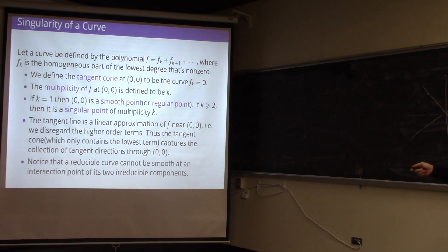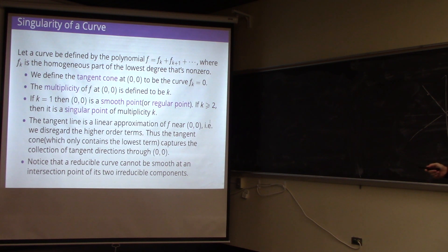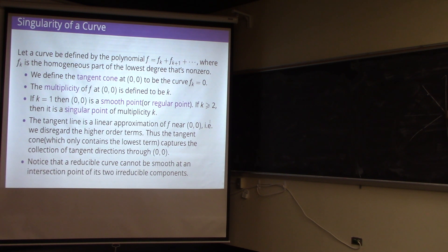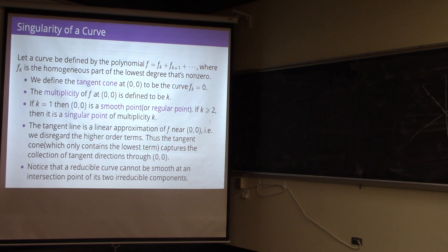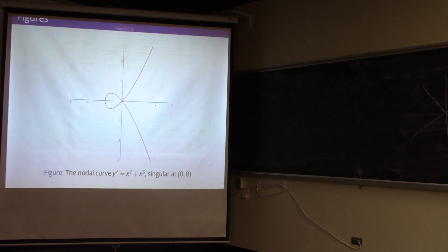If k = 1, meaning at least one first partial is nonzero, the point is called a smooth point or regular point. If k ≥ 2, it's a singular point of multiplicity k. You can think of the tangent cone as containing only the lowest-order terms — throwing away all higher terms — giving you the collection of all tangent directions through (0,0). A reducible curve cannot be smooth at the intersection point of two irreducible components.